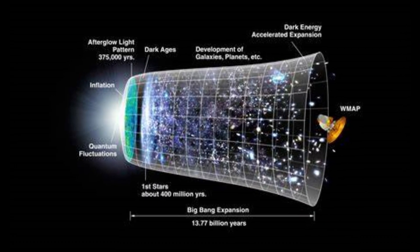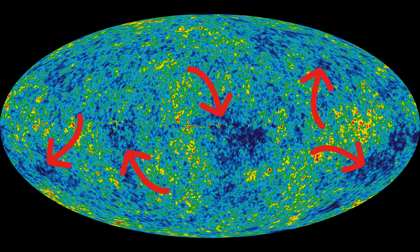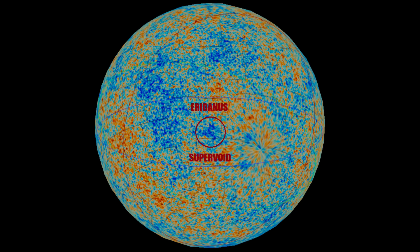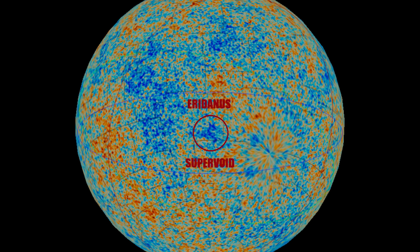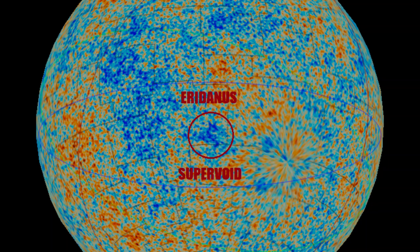First, we need to understand what is so anomalous about it. As we have already established, small temperature fluctuations across the microwave background are normal, and even colder spots exist across the sky. Its size makes it anomalous. Its diameter is approximately 10 degrees. That's 20 times the diameter of the full moon, or sun, in the sky.